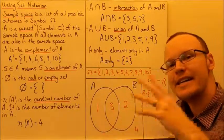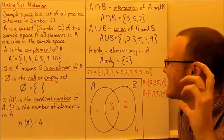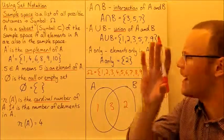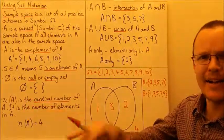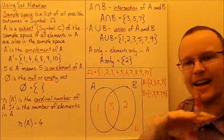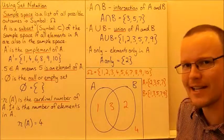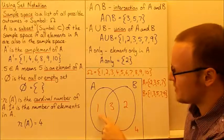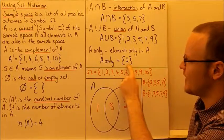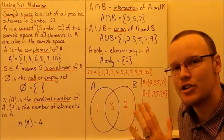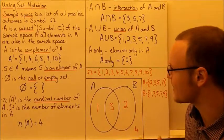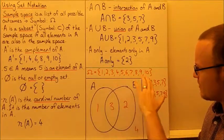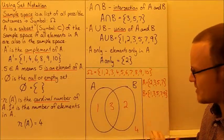A only is the elements only in A — the ones that are in A but aren't in B, exclusive to A. We know there's only one element there, and that element is 2. So this is how we draw the Venn diagram, and that shows our sets.